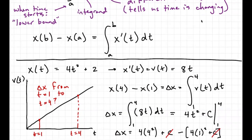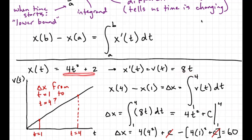Doing the arithmetic: 4 times 4 squared is 64, minus 4 is 60. So the displacement from time equals 1 to time equals 4 is 60 — probably meters or centimeters. The key was doing this antiderivative: going from the derivative of a function to predicting what that function must look like. If you know the rules for taking a derivative, you know the rules for taking an antiderivative too — you just apply the rules for derivation in reverse.